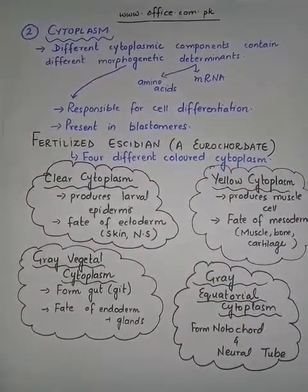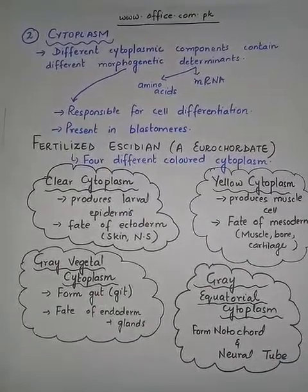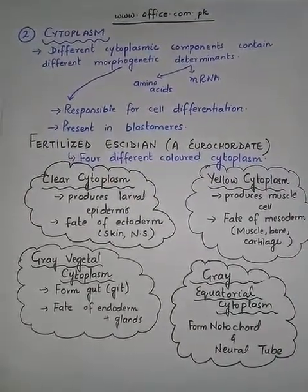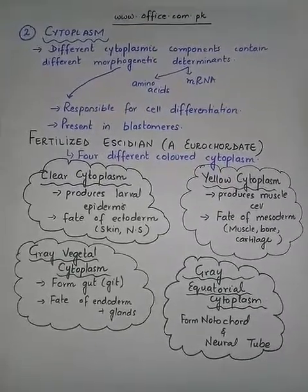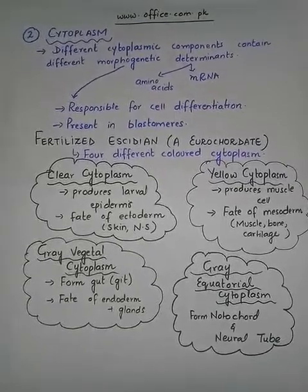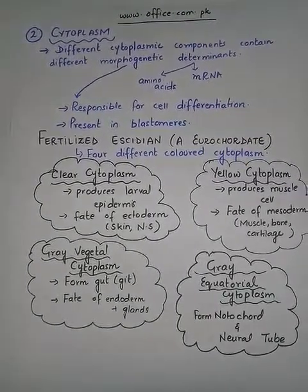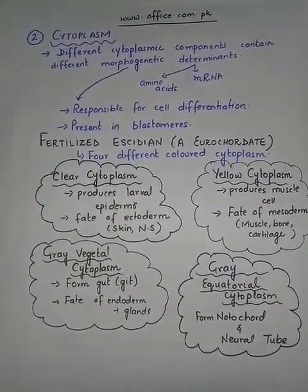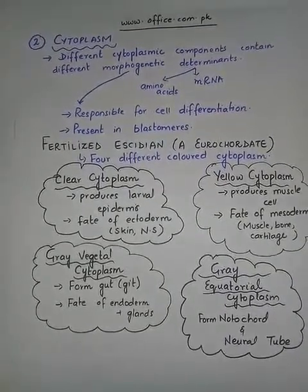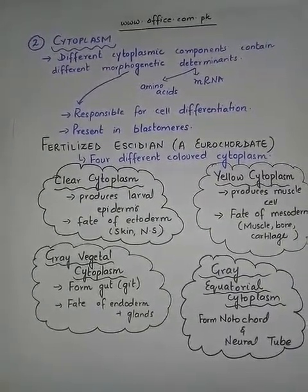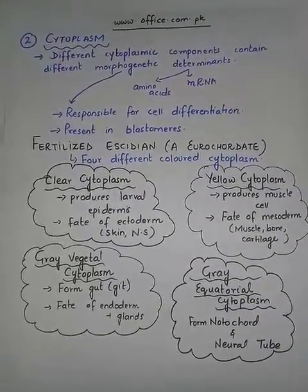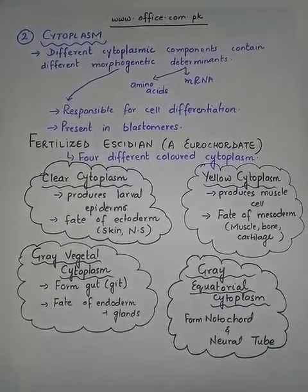Now let us come to point number two: the role of cytoplasm in the development of an embryo into a complete adult organism. Cytoplasm is a house of a variety of organelles and non-organelles such as different minerals, metals, ions, and other nutrients. It also contains different types of RNA.